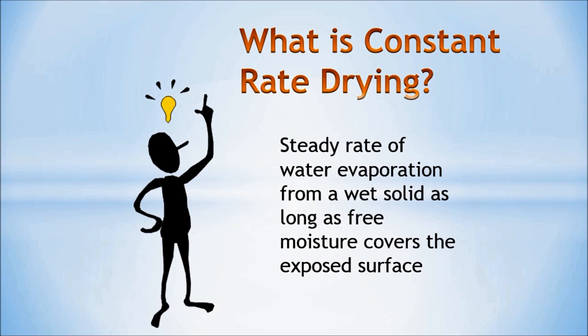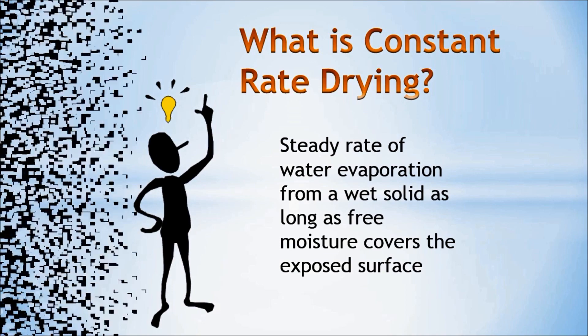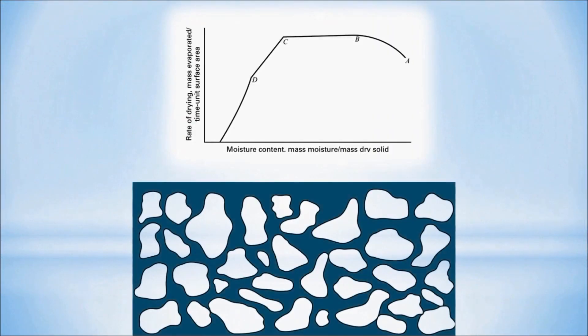To have a better insight about this term, we can use the drying rate curve and also a figure of wet solid at the bottom to explain it. As depicted in the graph, we can divide the plots into four drying periods. However, for some materials, fewer than four drying periods are observed.